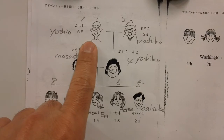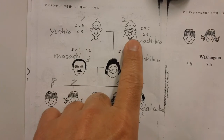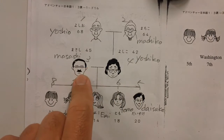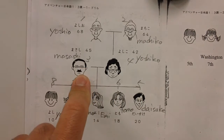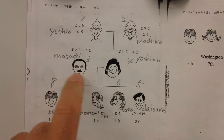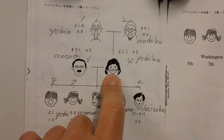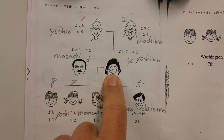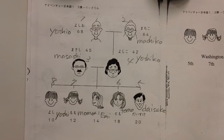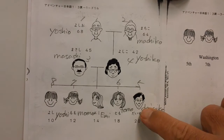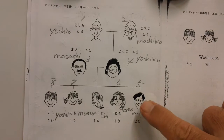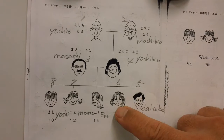お じいさん — grandpa. おばあさん — grandma. お父さん — someone else's father. お母さん — someone else's mother. お兄さん — someone else's older brother. お姉さん — someone else's older sister.